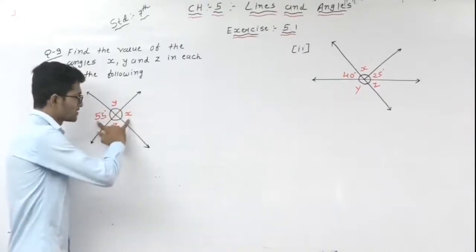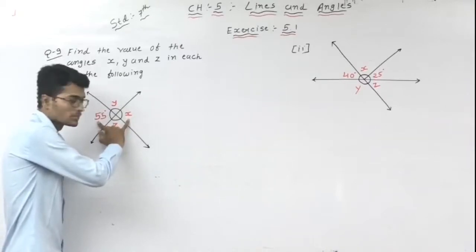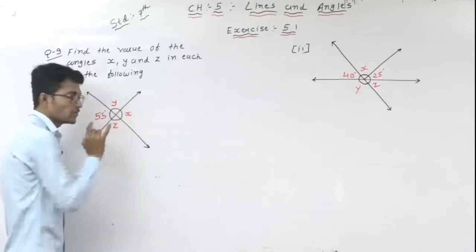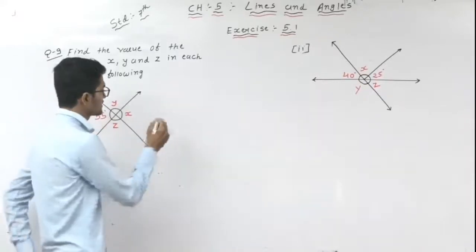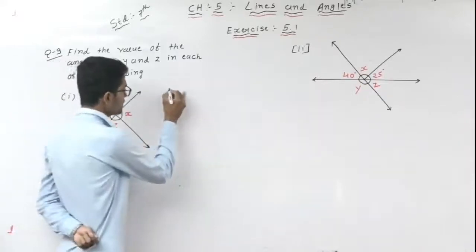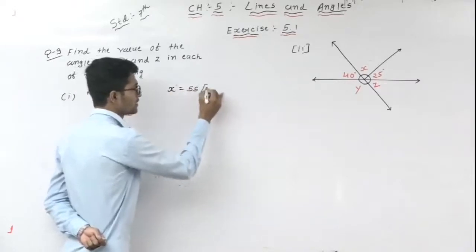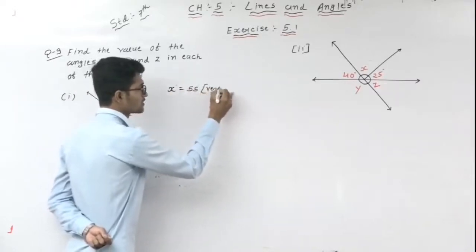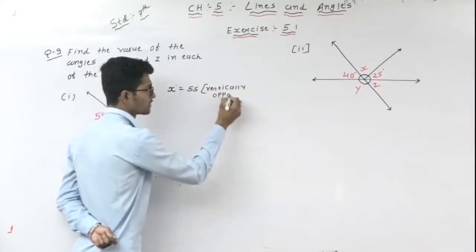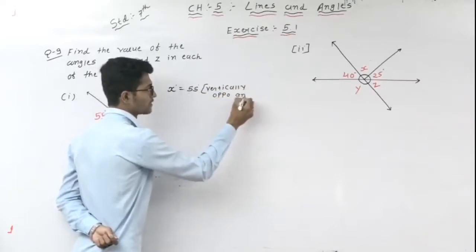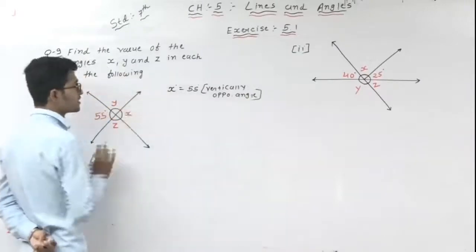55 and X are vertically opposite angles. Vertically opposite angles are always equal. So X is equal to 55 degrees, because this is a vertically opposite angle.